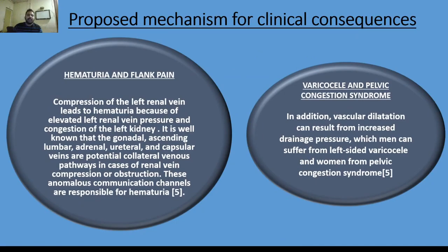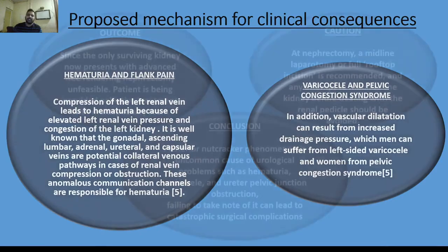Compression of the left renal vein leads to hematuria due to elevated left renal vein pressure and congestion of the left kidney. The gonadal, ascending lumbar, adrenal, ureteral, and capsular veins are potential collateral venous pathways in case of renal vein compression or obstruction. These anomalous communication channels are responsible for hematuria. Additionally, vascular dilatation can result from increased drainage pressure, causing left-sided varicocele in men and pelvic congestion syndrome in women.